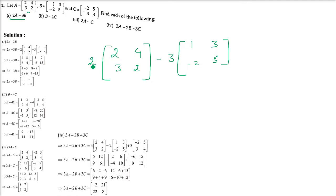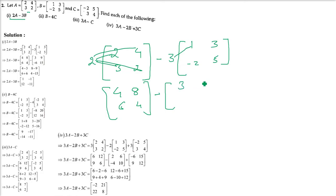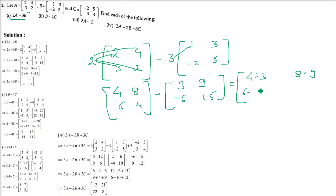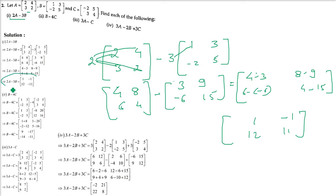Each element of A will be multiplied by 2: 2×4=8, 2×3=6, 2×3=6, 2×2=4. Then multiplication by 3: 3×1=3, 3×3=9, 3×(−2)=−6, 3×5=15. Now subtracting: 4 minus 3 gives 1; 8 minus 9 gives minus 1; 6 minus negative 6 gives 12; 4 minus 15 gives negative 11.